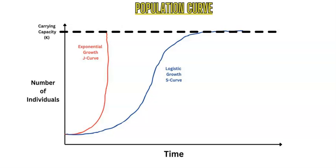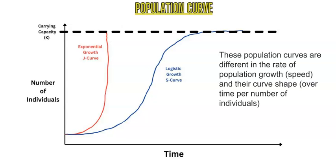When discussing populations you can discuss two types of population growth in a species, animals, or in particular humans. The two types are exponential growth, which is the J curve, and logistic growth, which is the S curve. The J curve is named for the shape of the letter J and the S curve for the letter S. These two population growths differ based on the speed at which population grows — number of individuals over time — and what creates these different curves.